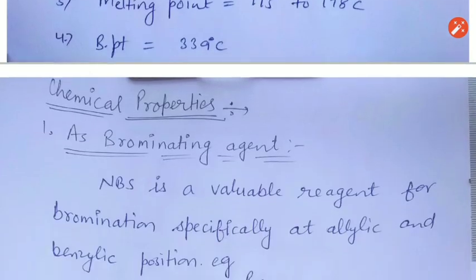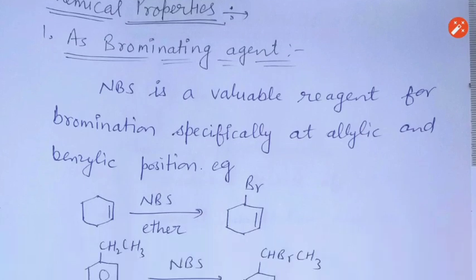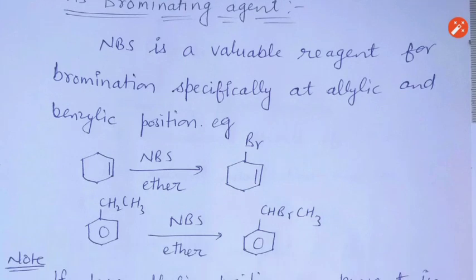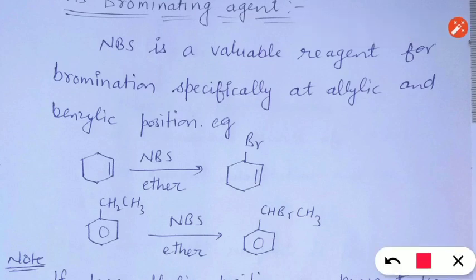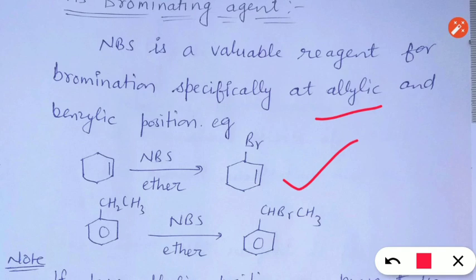Now we will study the chemical properties and applications of N-Bromosuccinimide. N-Bromosuccinimide can act as a brominating agent. It selectively brominates at allylic and benzylic positions of alkene or benzyl compounds. Here in the first reaction we have taken cyclohexene, which when reacted with N-Bromosuccinimide gives allylic bromo derivatives.